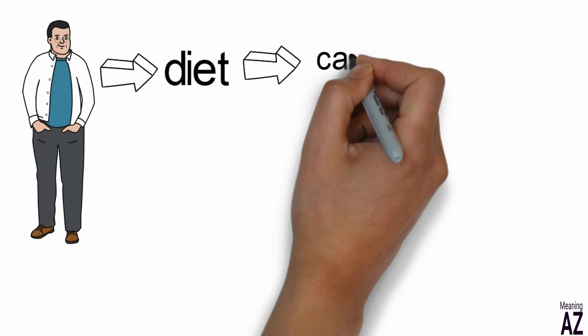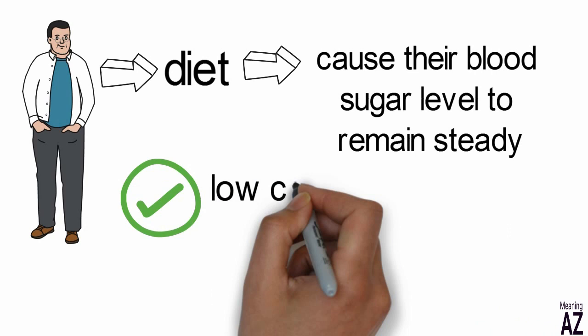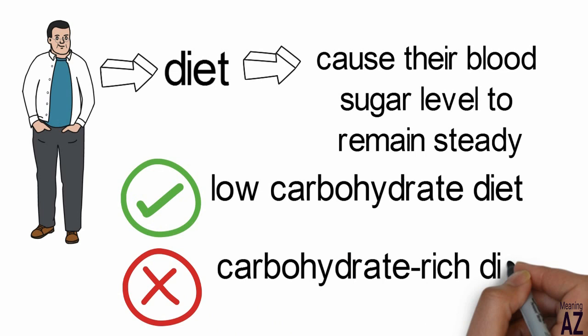Therefore, diabetics should adopt a diet which will cause their blood sugar level to remain steady throughout the day. A change in nutrition to a low carbohydrate diet is more effective than trying to balance fluctuations in sugar due to a carbohydrate rich diet. The basic food groups: as we have seen so far, the key to normalizing blood sugar levels and controlling diabetes lies in nutrition.